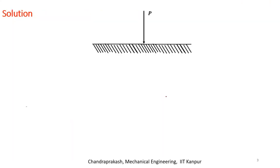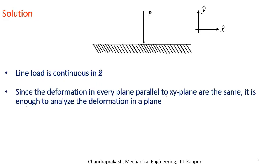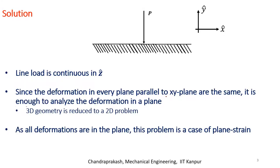This is the problem. The tenets or rules we will follow are: first, coordinate axis; next, free body diagram. Here it is semi-infinite, so there is nothing else to do apart from what has already been shown. Then we write the domain equations and the boundary conditions. The line load is continuous along the Z direction, and since the deformation in every plane parallel to the XY plane is the same, it reduces to a 2D problem — specifically, a plane strain problem.